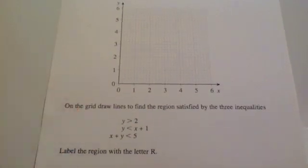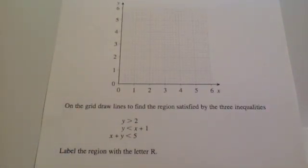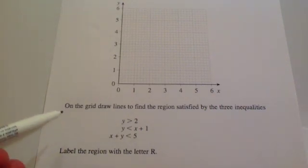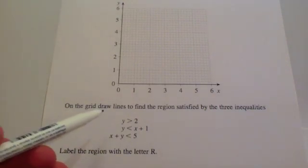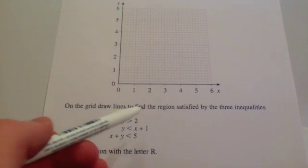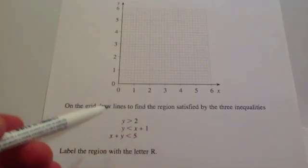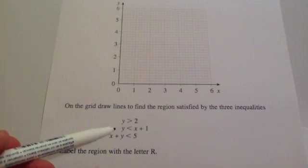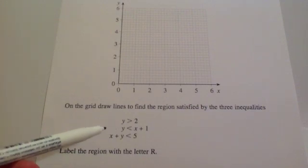So here we've got a typical question. Make sure you watch the video on graphical inequalities part one and two, because that will explain how I'm going to do some of the steps. It says: on the grid, draw lines to find the region satisfied by the three inequalities — y is bigger than two, y is less than x plus one, and x plus y is less than five.